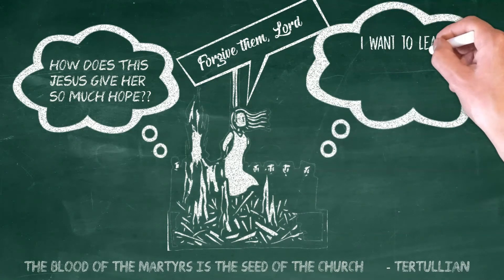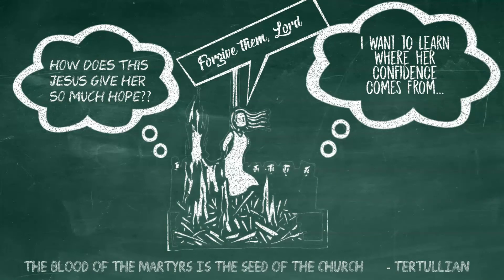And this happened so much that one of the early Christians, a guy named Tertullian, made this observation. The more you mow us down, the faster we grow. The blood of the martyrs is seed for the church.